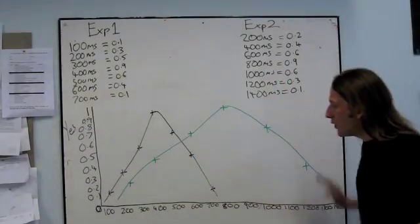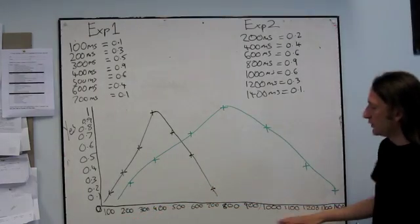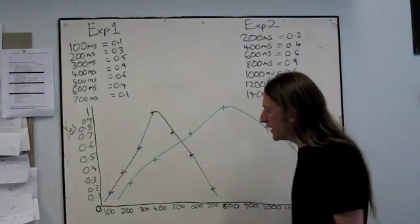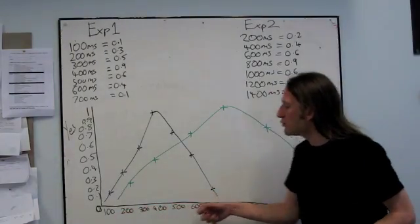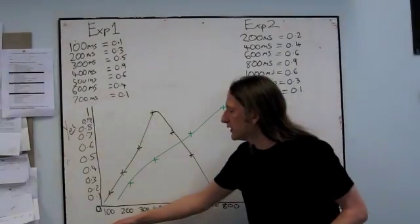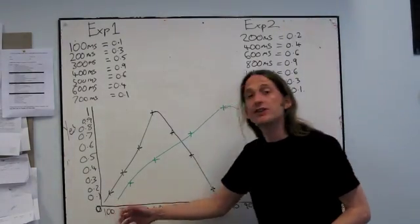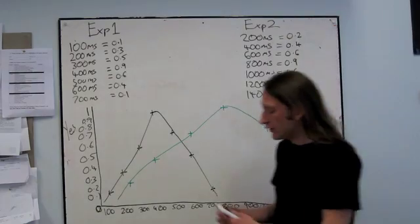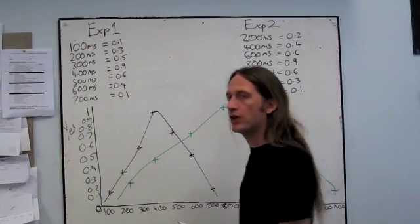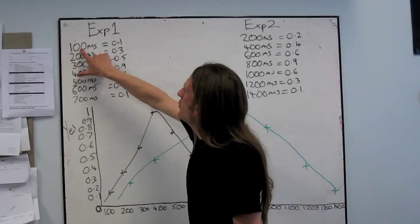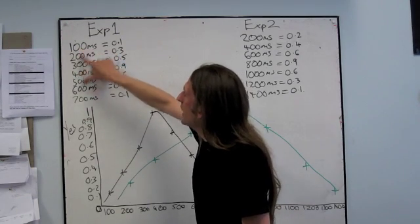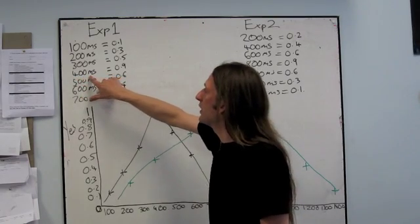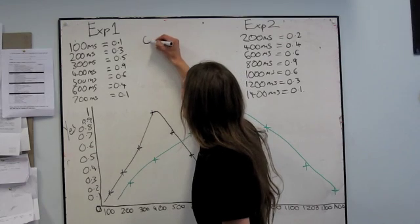So in order to do that, what I want to do is, instead of plotting it on an absolute scale, I want to plot it on a relative scale. So this time, instead of plotting it against the actual duration of the comparison, I want to plot it against how much of a proportion of the standard the comparison was. So let me go through this one and I'll show you what I mean. So the 100 millisecond comparison is a quarter of the duration of the standard duration. So as a proportion, it's 0.25.